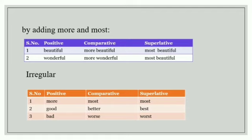Some words do not obey the rules. They form their comparative and superlative degrees in their own way. They are called irregular comparatives and superlatives. For example, more, most, most. Good, better, best. Bad, worse, worst.